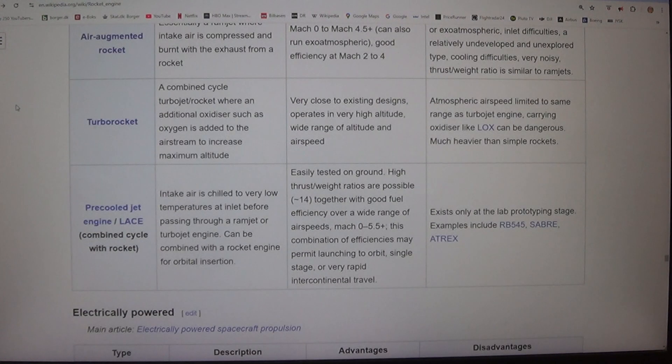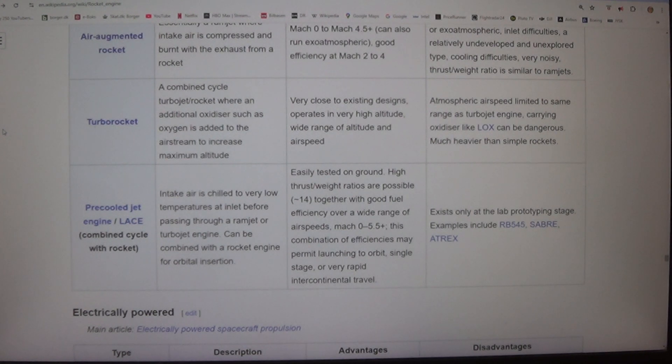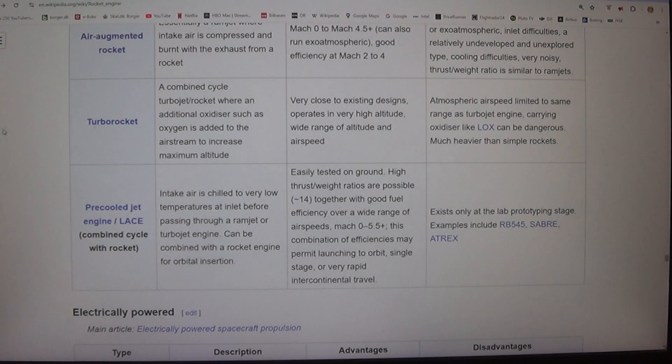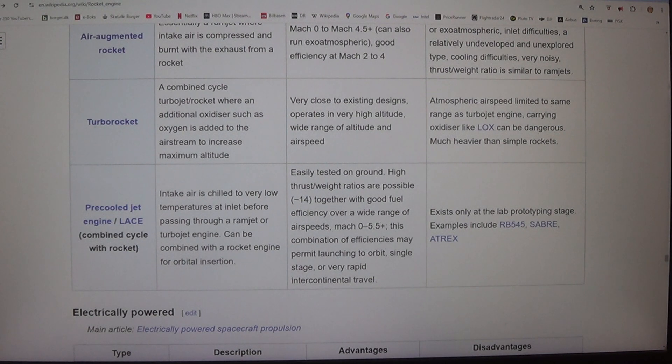Turboramjet - a combined cycle turbojet/rocket where an additional oxidizer such as oxygen is added to the airstream to increase maximum altitude. Very close to existing designs. Operates in very high altitude. Wide range of altitude and airspeed. Disadvantages: Atmospheric airspeed limited to same range as turbojet engine. Carrying oxidizer like LOX can be dangerous. Much heavier than simple rockets.